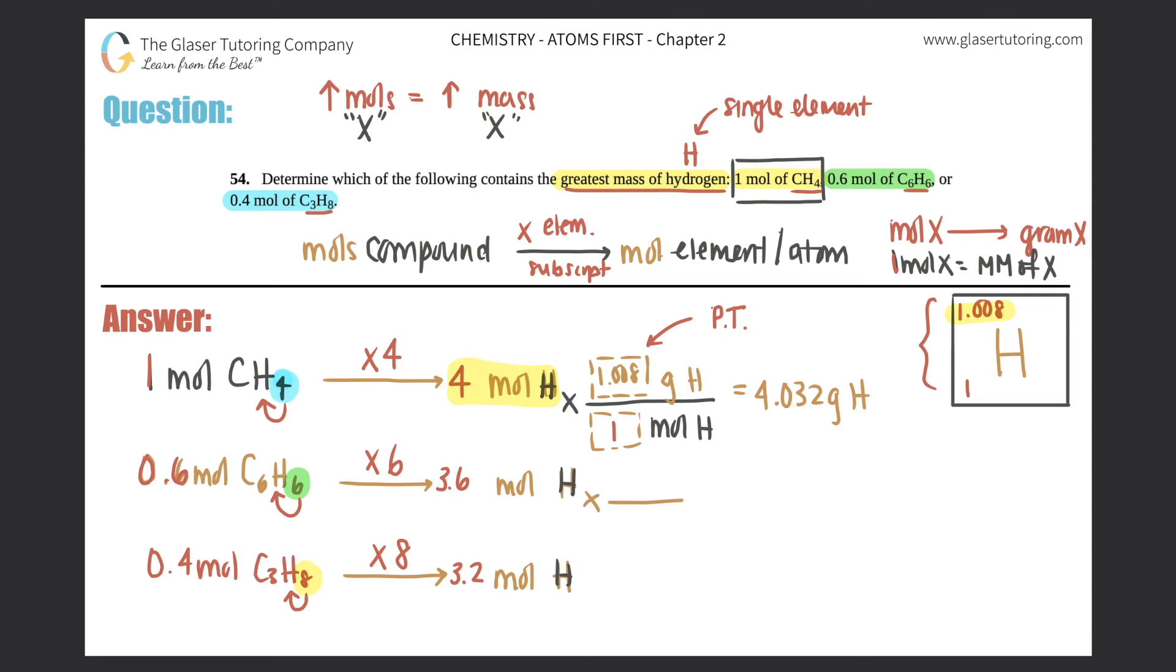And then if you do the same thing for the other two, then you can compare the mass numbers and then you would get the answer. So if you do the same exact conversion factor, one mole of H is 1.008, moles cancels out. So 3.6 times 1.008, you get 3.6288 grams of H. So you see how this one is less.